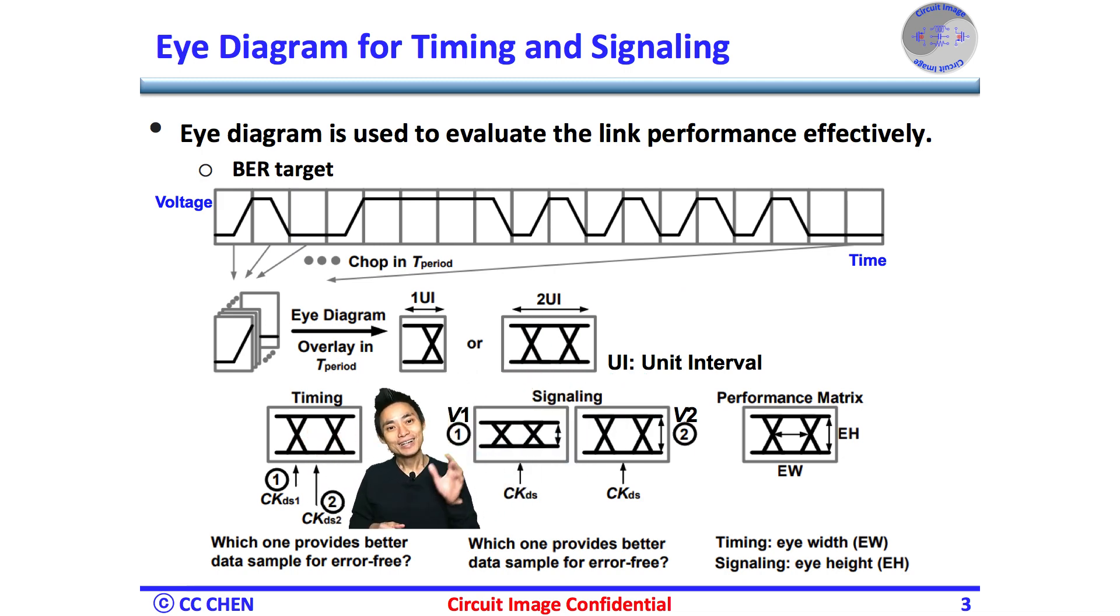Let's go through the eye diagram example once again. How it becomes very useful tool for evaluating the design margin of the timing or signaling. For example, can you identify whether the CK data sample one or the CK data sample two is better to get the right decision or error-free?